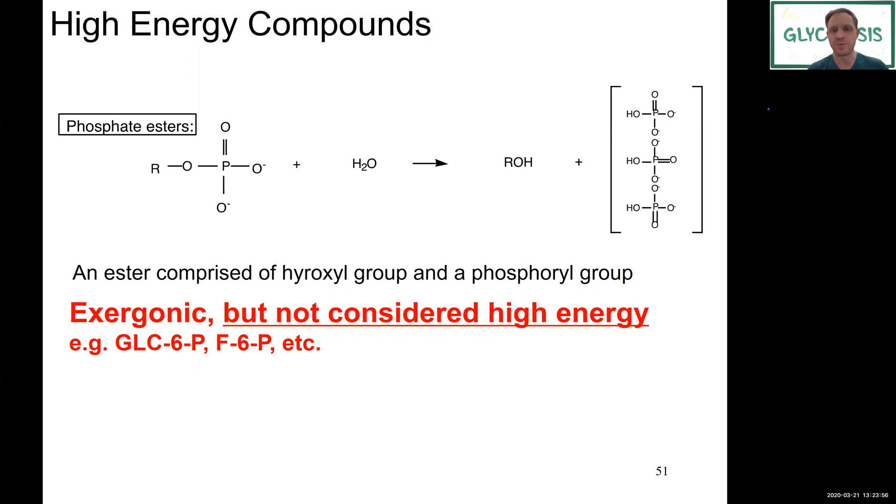The first one is phosphate esters. Note here the hydrolysis of a phosphate ester is exergonic, but they're actually not considered high energy because they're not releasing enough energy to make this bar of minus 25 kilojoules per mole. But we have encountered phosphate esters before, right?